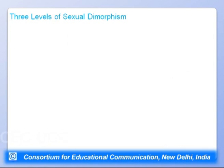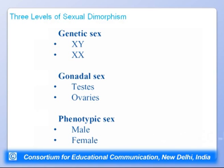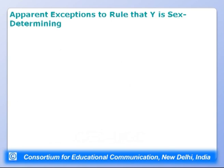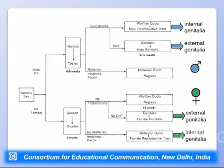There are three levels of sexual dimorphism: genetic sex (XY = male; XX = female), gonadal sex (testes in males; ovaries in females), and phenotypic sex (the observable male or female characteristics). The genetic constitution of the cell — whether XY or XX — governs the production of male or female. If the genetic constitution is XY, the gonads develop into testes in six to eight weeks.